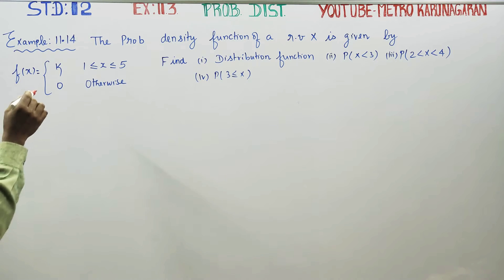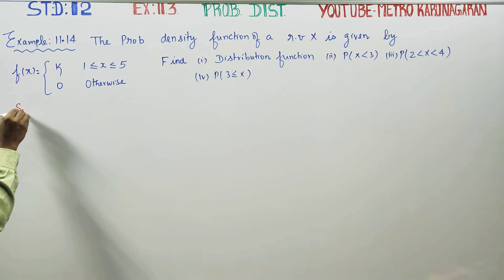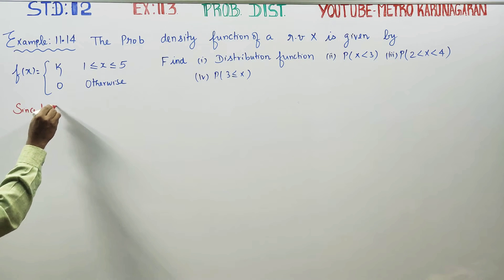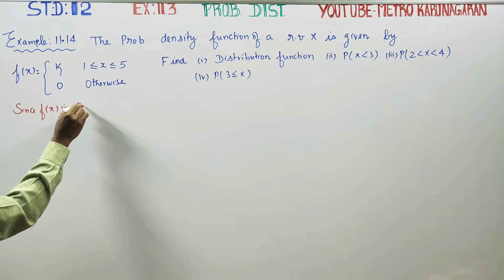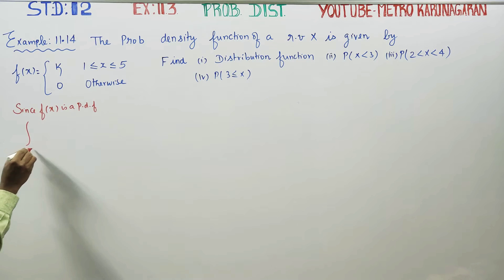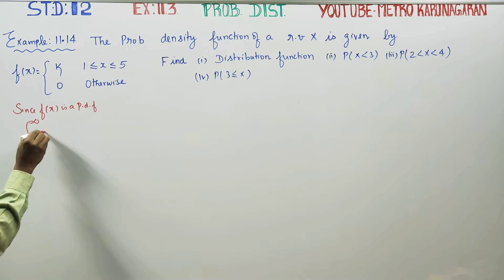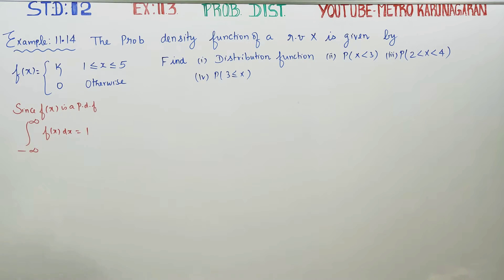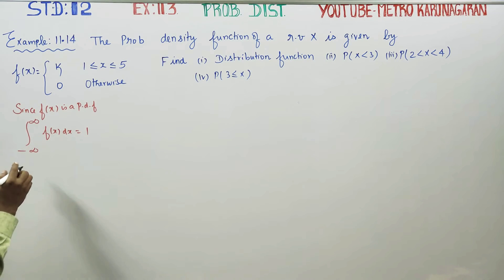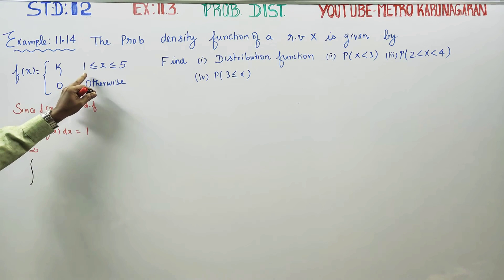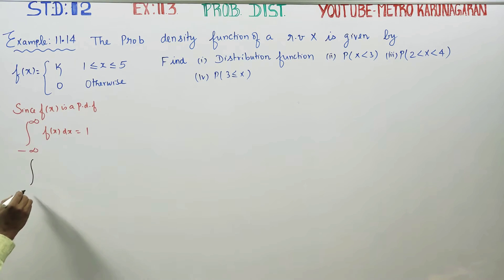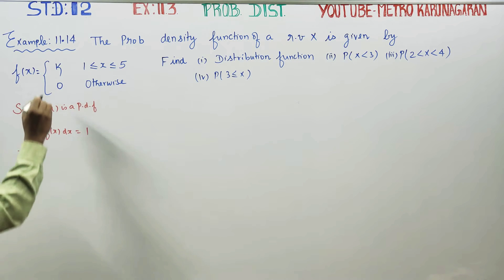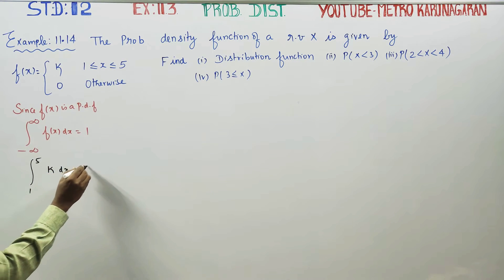This is the probability density function. Since f of x is a probability density function, integration from minus infinity to plus infinity of f of x dx equals 1. The function is defined from 1 to 5, so integration from 1 to 5 of k dx is equal to 1.